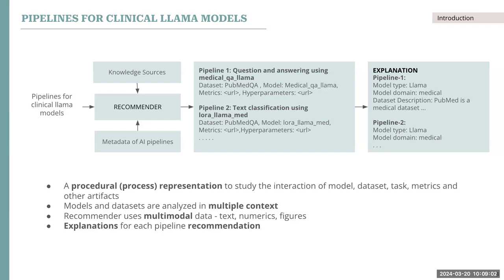Here also, the recommender requires procedural representation of the pipeline that captures the interaction among the model, dataset, metrics, and other artifacts present in the pipeline. The models and datasets are to be analyzed in multiple contexts, so the recommender should also have access to multi-contextual knowledge sources. The recommender should be able to handle multimodal data — text, numerical data, and figures of the pipelines — because metrics are in the form of numerics and figures are generally presented in the published documentation. Finally, in order to ensure trustworthiness and safety of the system, explanations of these pipeline recommendations should also be provided. From both of these use cases, it is evident that we are trying to do a recommendation over process models and also provide explanations on top of it — hence, 'explainable process recommendation,' the title of the dissertation.